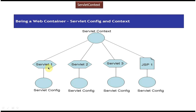For each servlet, a Servlet Config object will be created by the servlet container. You can see Servlet 1 has one Servlet Config, Servlet 2 has another Servlet Config, Servlet 3 has another Servlet Config, and JSP 1 has another Servlet Config. But Servlet 1, Servlet 2, Servlet 3, and JSP 1 are all sharing the same Servlet Context.